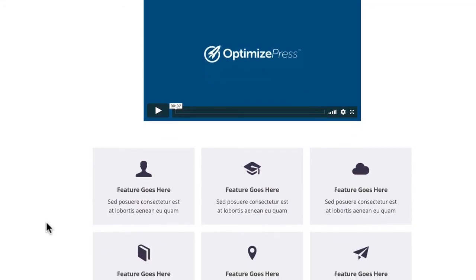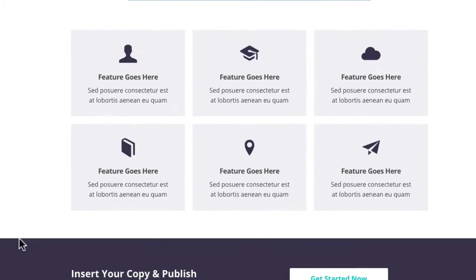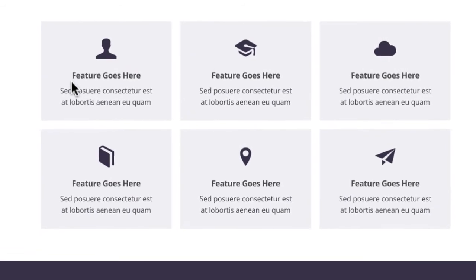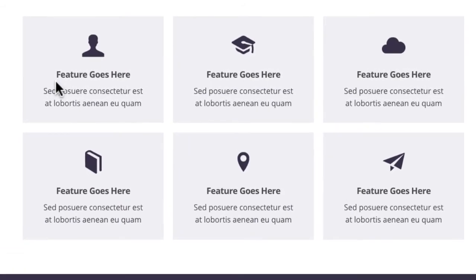We then drop down into a benefits or features block area where you can put in more information about your app — what it does, all the different benefits or features. You can see the little icons, which are default icons that come with OptimizePress inside these little colored boxes, which breaks up the same color background and makes them stand out better on the page.